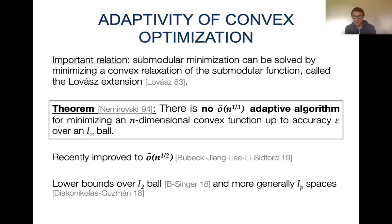Only very recently this lower bound was improved to n to the one-half in a very recent paper. We can also obtain lower bounds for convex minimization not only over the L-infinity ball, but also over the L-2 ball, and more generally over normed spaces.